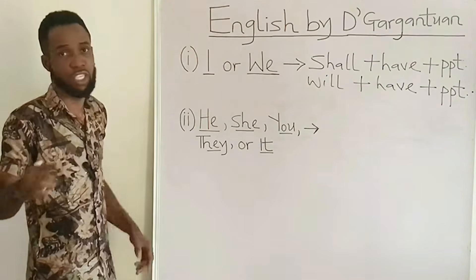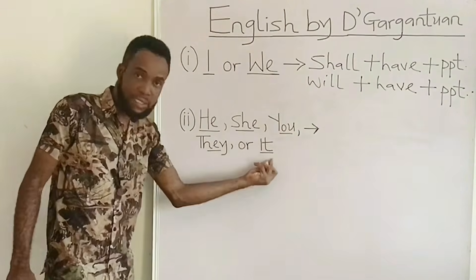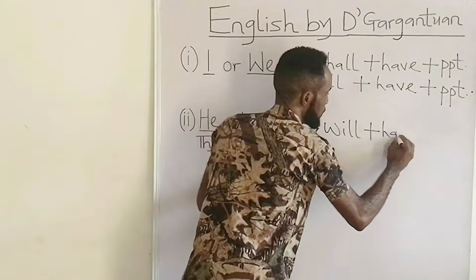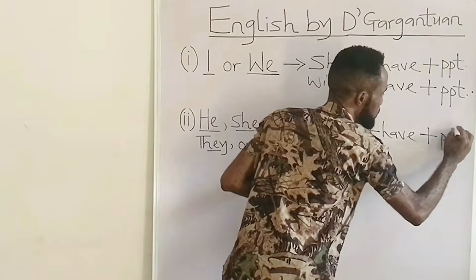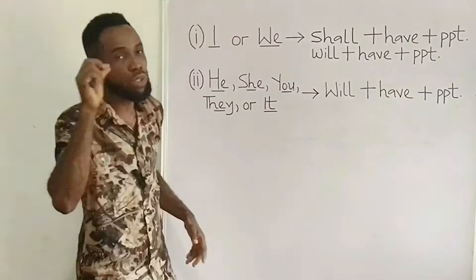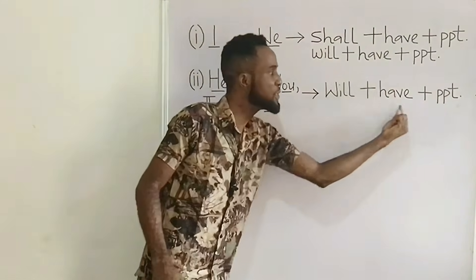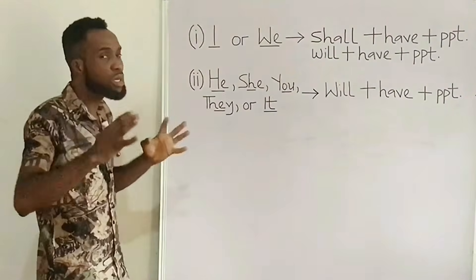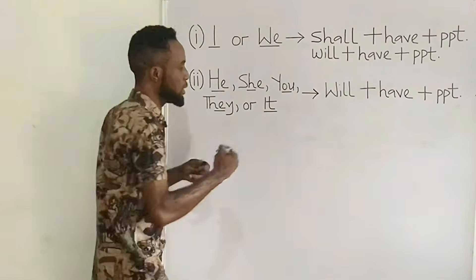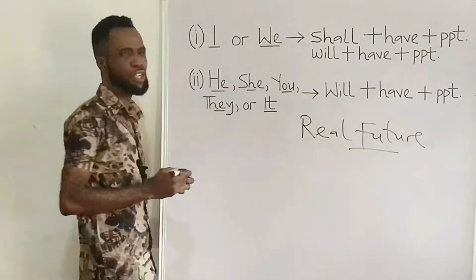If what comes immediately after time in the question is the pronoun 'he,' 'she,' 'you,' 'they,' or 'it,' then the answer to the question is 'will + have + a past participle verb' (PPT for short). Please note that for both of these cases — whether the pronoun is 'I' or 'we,' or 'he,' 'she,' 'you,' 'they,' or 'it' — the future is a real future.